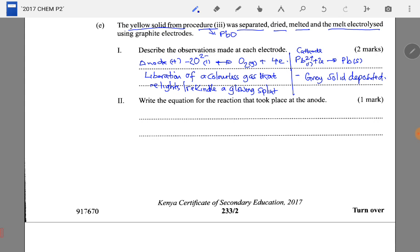Write the equation for the reaction that took place at the anode. At the anode we have said this is what happens. Oxide ions are discharged by releasing electrons to form oxygen gas: 2O²⁻ → O₂ + 4e⁻. Yes, that is the equation at the anode.